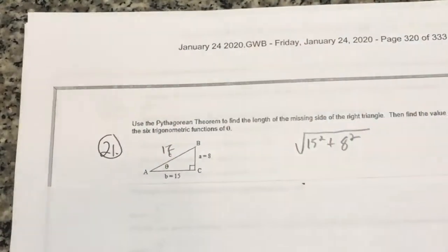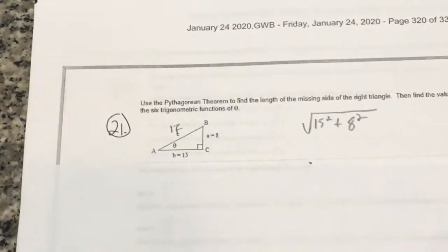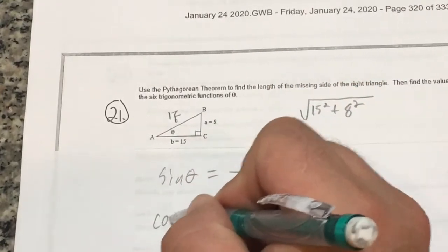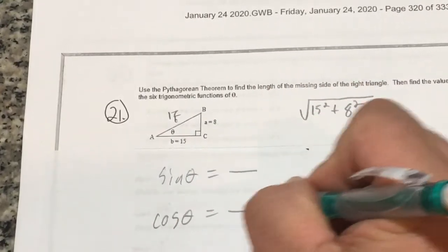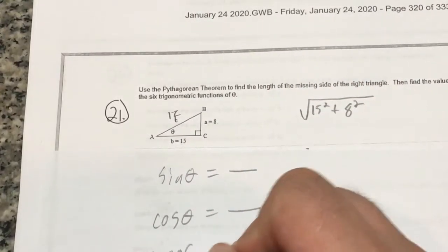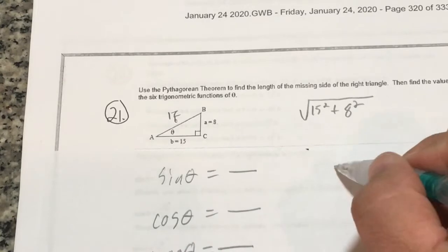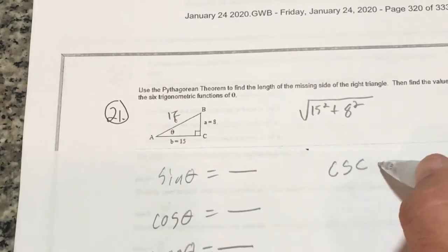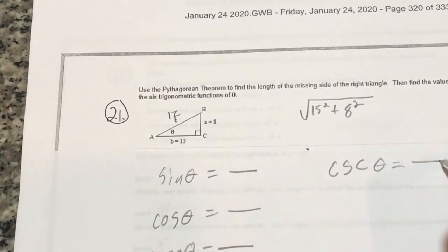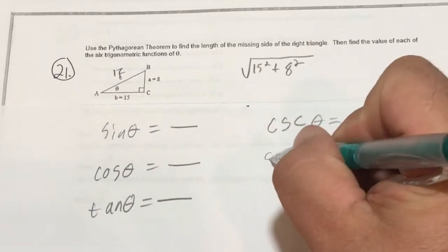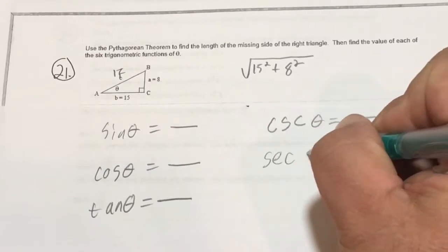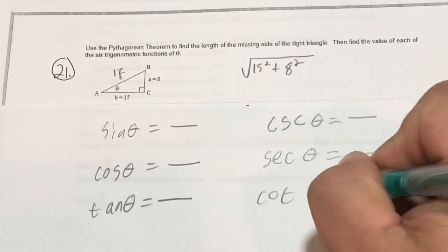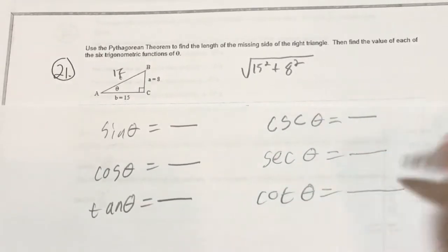Now I can solve every trig ratio. Sine of theta equals a fraction, cosine theta equals a fraction, tangent theta equals a fraction, cosecant theta equals a fraction — it goes with sine — secant theta equals a fraction, and then cotangent theta equals a fraction.